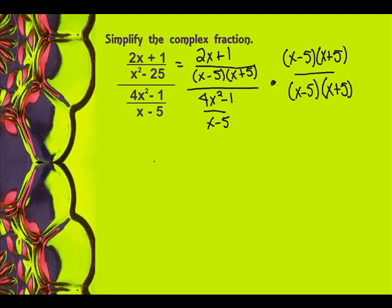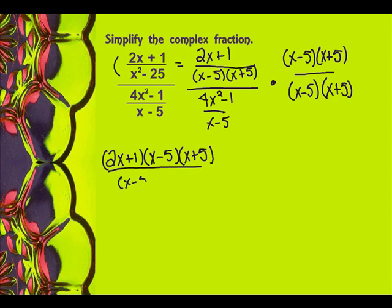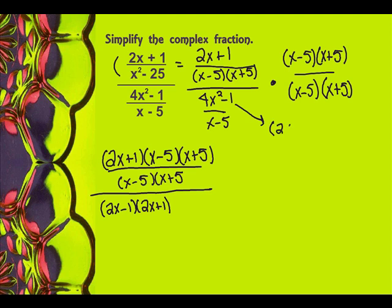So let me show you what that's going to look like. I'm going to have 2x plus 1 times x minus 5 times x plus 5 over x minus 5 times x plus 5 — that's still the top part — all divided by: I'm going to factor that, so that's going to be 2x minus 1 times 2x plus 1, because remember it's a difference of squares. And now I still have to multiply by x minus 5 times x plus 5.